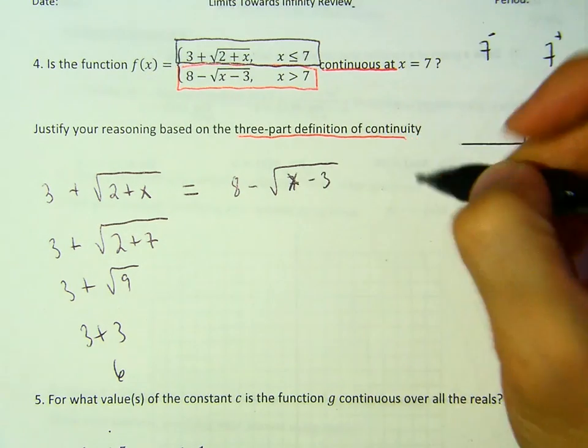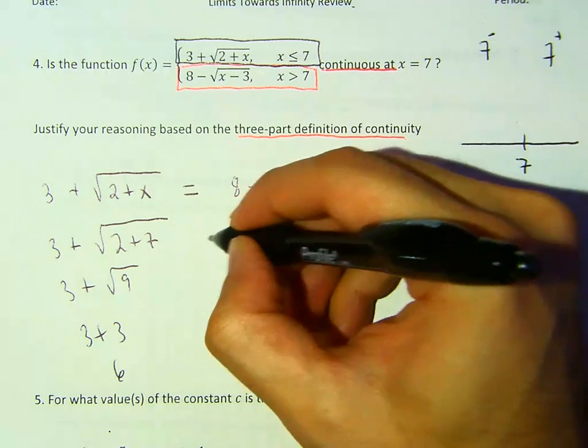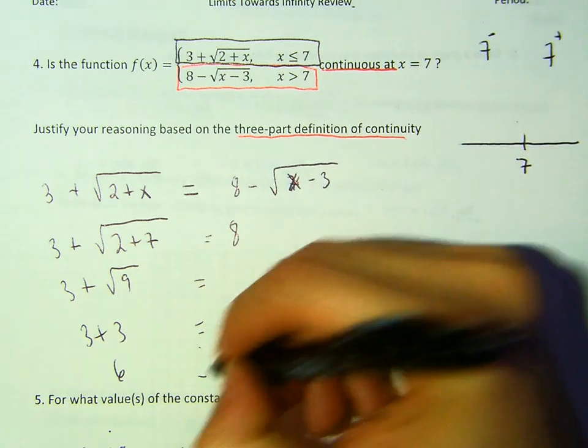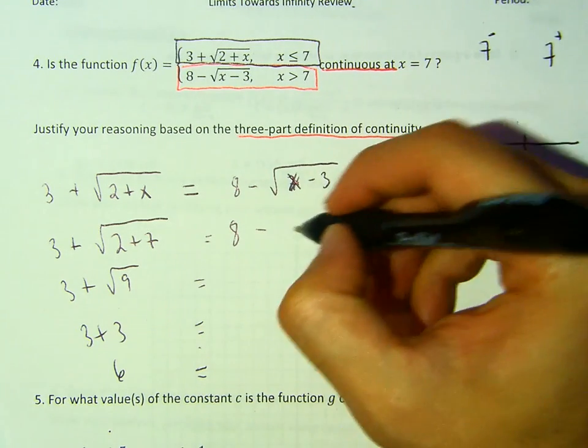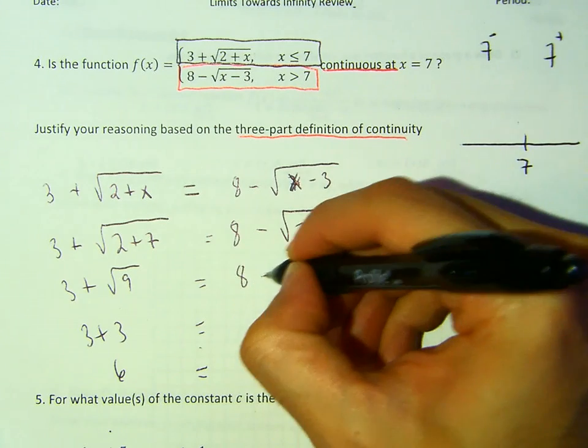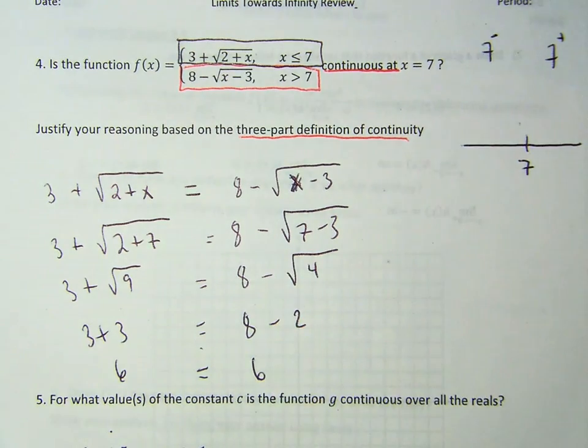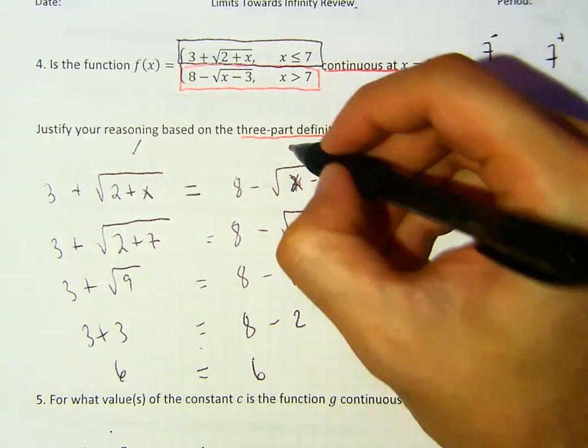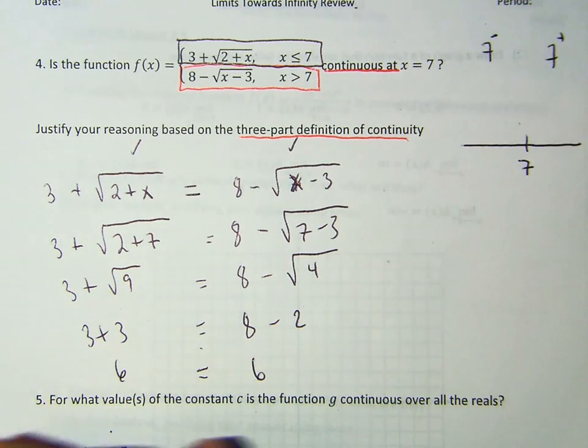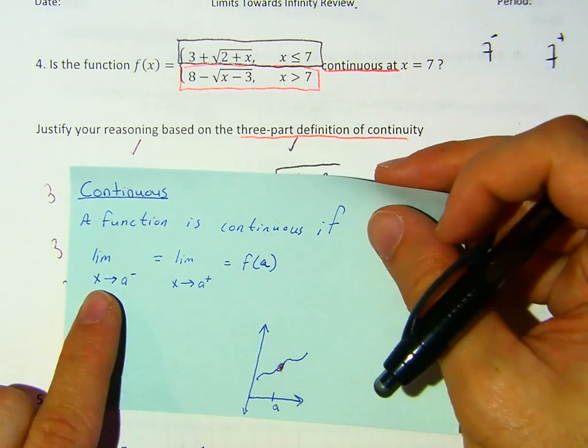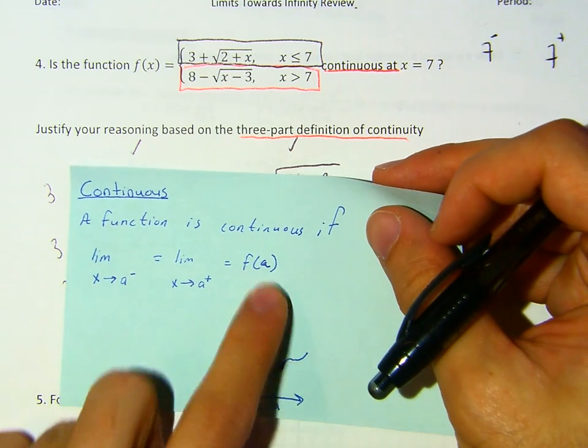Well, now we have 8 minus square root of 7 minus 3, right? I'm sorry. Let's do X minus 3, right? So then 8 minus square root of 7 minus 3, which is 8 minus square root of 4, which is 8 minus 2, which is equal to 6. So, so far, so good. So notice that we have the left.